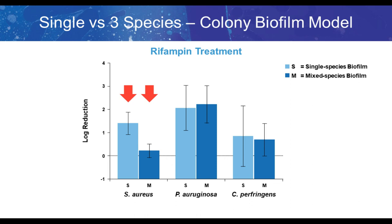Here's an example of the effect of a polymicrobial biofilm on antimicrobial efficacy from work done in my lab, using the colony biofilm model. We either have single species or mixed species biofilm of Staphylococcus aureus, Pseudomonas aeruginosa, and Clostridium perfringens, an anaerobe. When we treat these biofilms with rifampin for Staphylococcus aureus, we get a much better log reduction in the single species biofilm than in the multi-species biofilm.